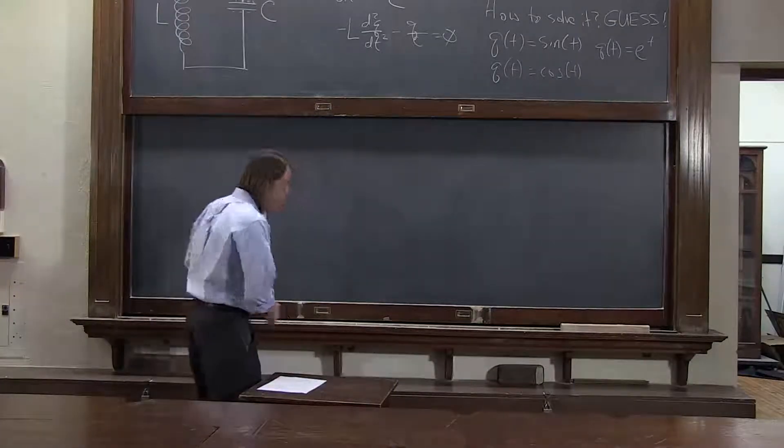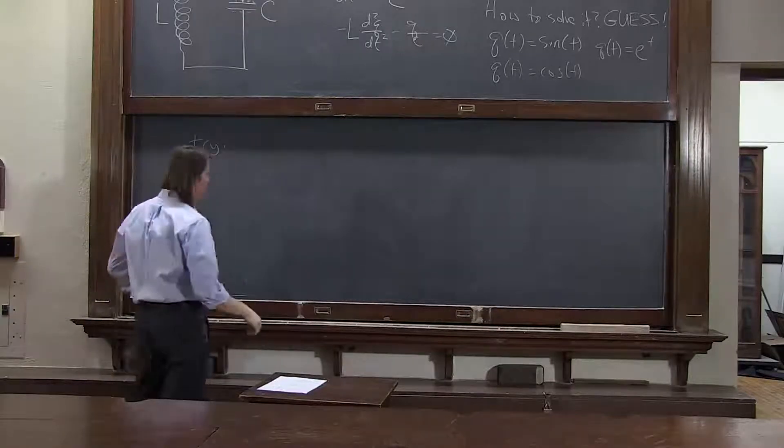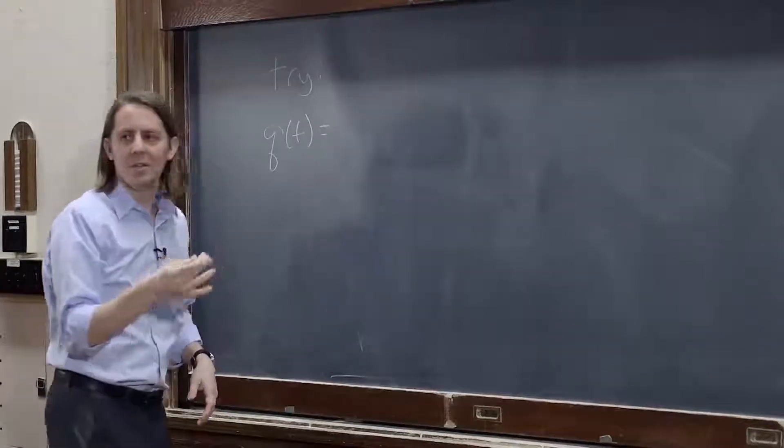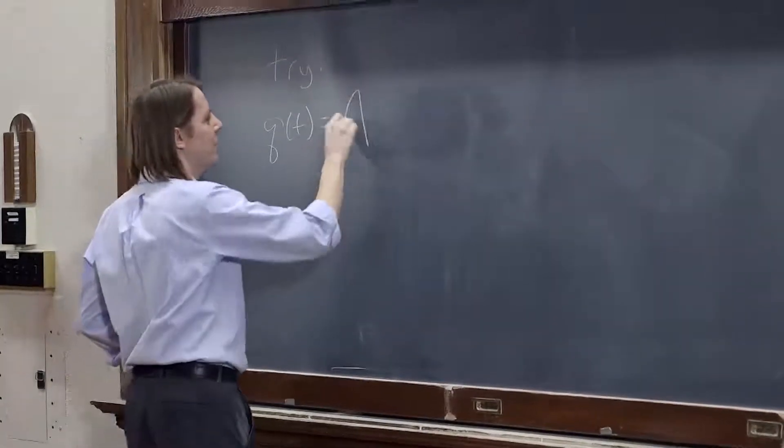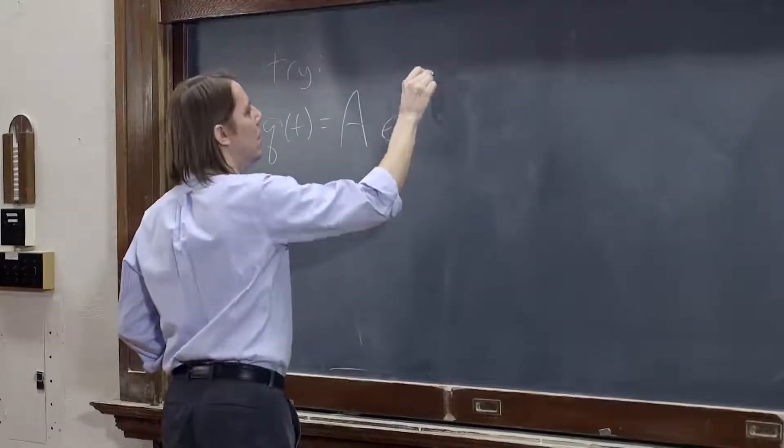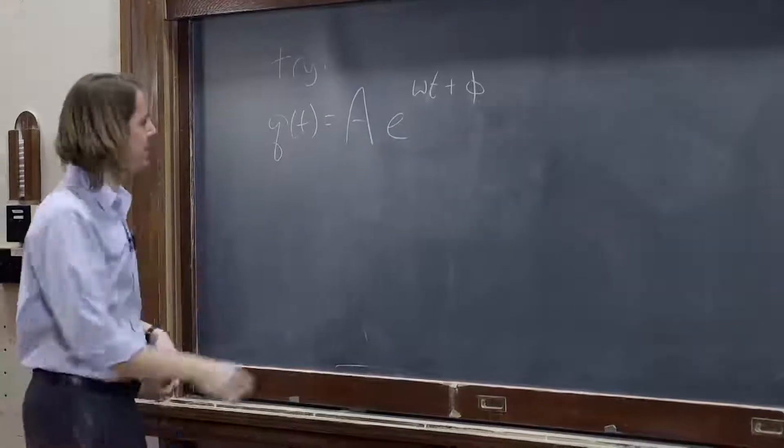We had three guesses, we might as well use them all. Let's try the exponential q of t, and we'll make it general. We'll kind of like the sinusoids, we'll put an a in front of it, e to the omega.